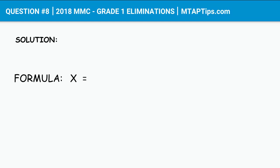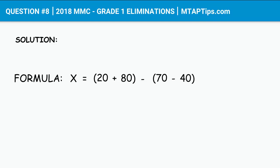So let's put this statement in a formula. We get X, which will be the unknown number, equal to (20 + 80) minus (70 - 40). We put them in parentheses so we can group them and don't mix them up, because we need to get the sum of 20 and 80 first before we subtract the difference of 70 and 40.